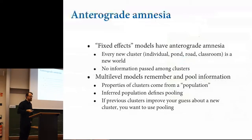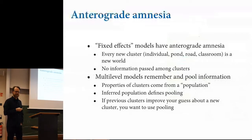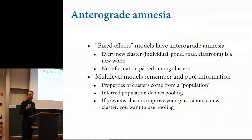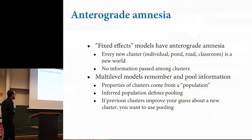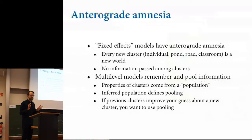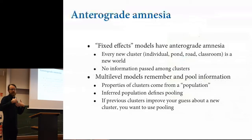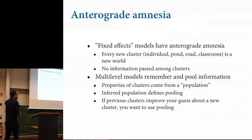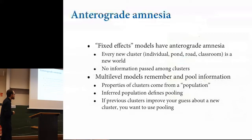The strategy multilevel models use to get this pooling of information is that properties of clusters come from some population. This is a statistical population — it just means that it makes sense to use some of your estimate from one cluster when making a guess about the next. The inference about the population defines the pooling phenomenon. All the previous clusters actually improve your guess about any new cluster. The decisive question is: if you encounter a new cluster, do all the other clusters help you make a guess? If yes, you should use a multilevel model. If not, use the fixed-effects model.